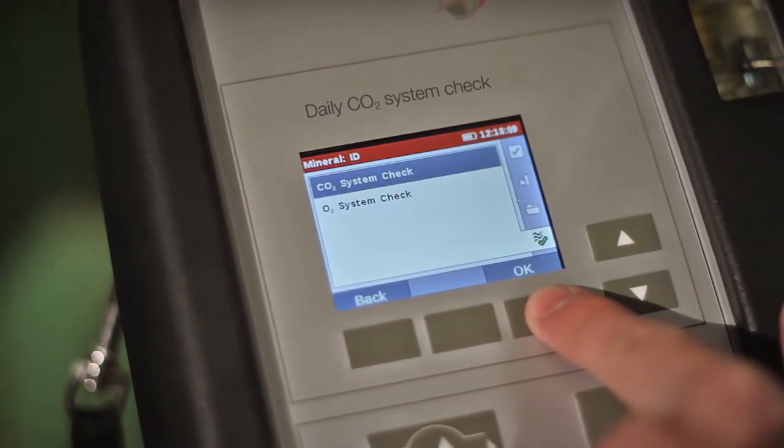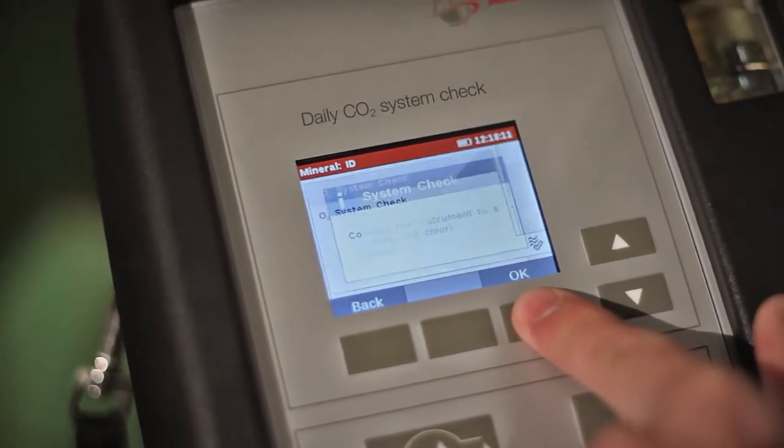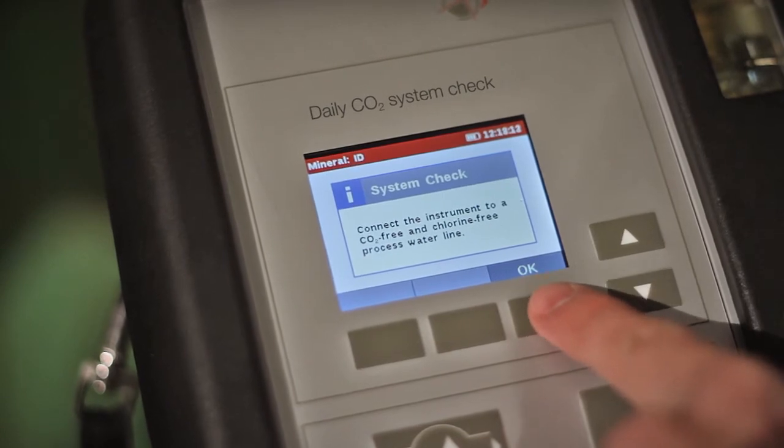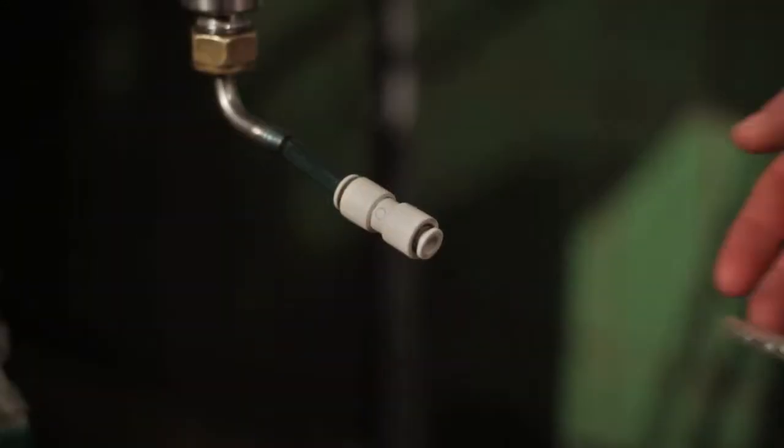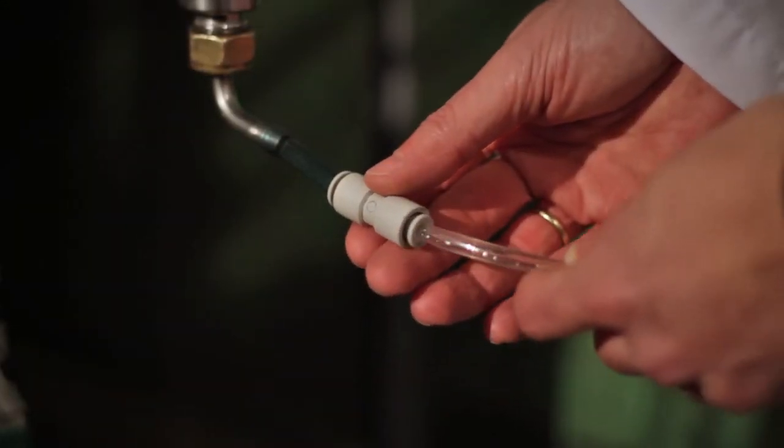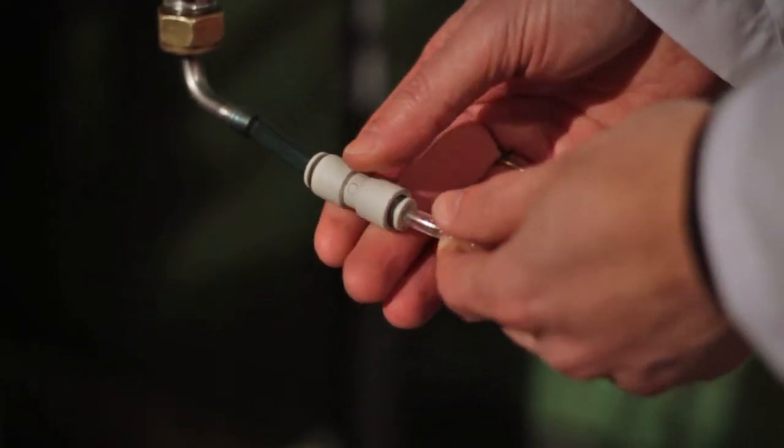The implemented CO2 system check is recommended daily before you start the first measurement procedure. Connect the instrument to the water line and use CO2-free process water.